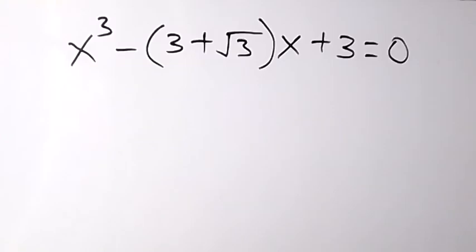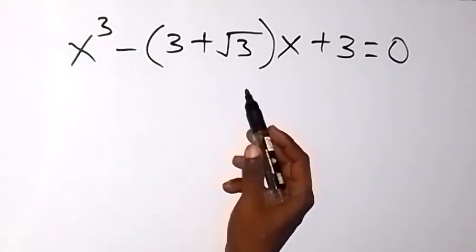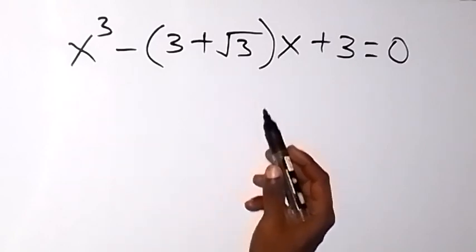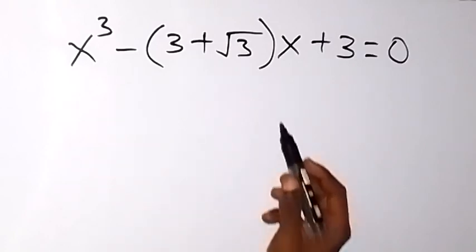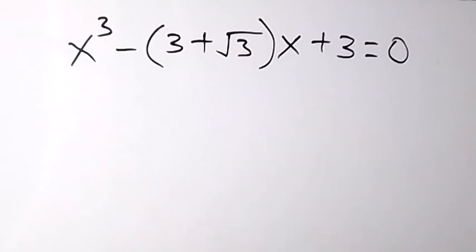Good day. How to solve this problem? x raised to power 3, minus into bracket (3 plus root 3) then times x, plus 3, equals to 0.